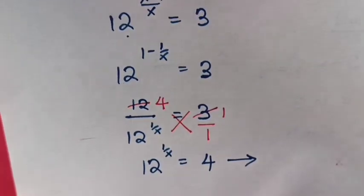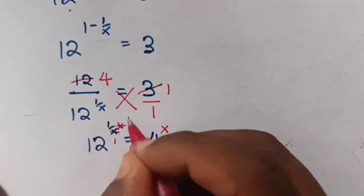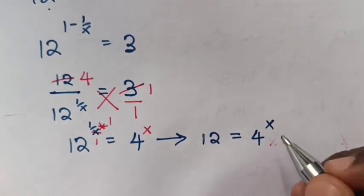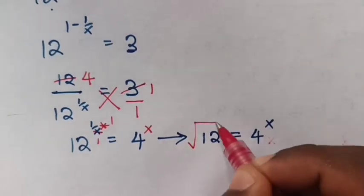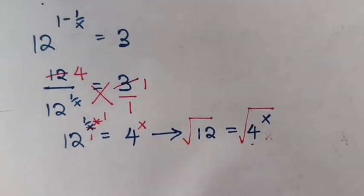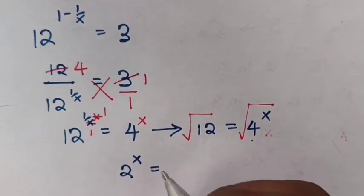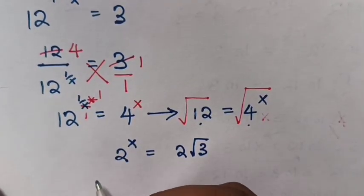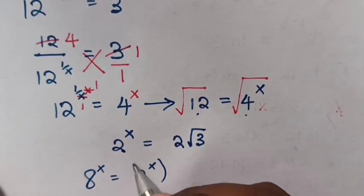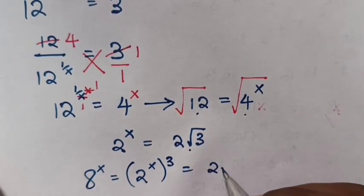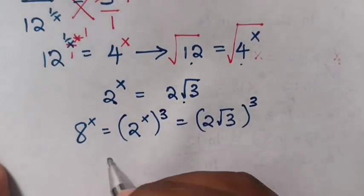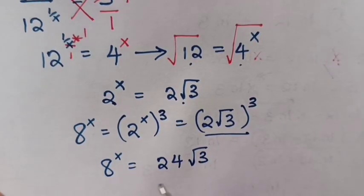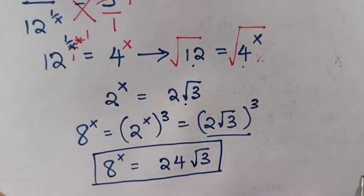We raise both sides to the power of x: 12 equals 4 power x. Then we apply square root on both sides: square root of 4^x is 2 power x, and square root of 12 is 2√3. So 2 power x equals 2√3. We are asked to find 8 power x, and 8 power x is (2 power x) cubed, so 8 power x equals (2√3) cubed equals 24√3. Don't forget to subscribe to my channel. See you in the next video, bye bye.